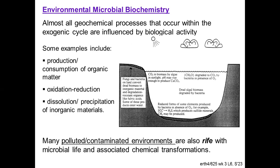Almost all geochemical processes that occur in the exogenic cycle are influenced by organisms. I've given a list here of some of the really common things, such as the production and consumption of organic matter through photosynthesis and respiration, the redox state of the environment by oxidation-reduction, the dissolution and precipitation of inorganic minerals, be they shells or substrate or skeletal elements or cements. Many of them are produced by microorganisms. There's a diagram from your text which shows you some other processes related to biological activity associated with photosynthesis and respiration, breaking down of organic matter, forming of new organic matter, happening in a body of water and the watershed around it. It's also useful to note that many polluted and contaminated environments also have a lot of microbial life associated with them.